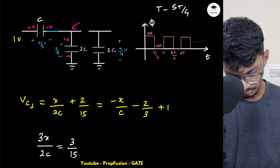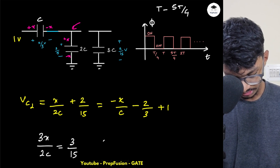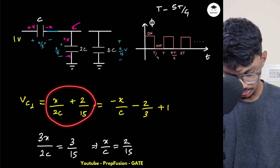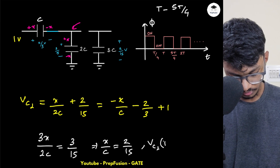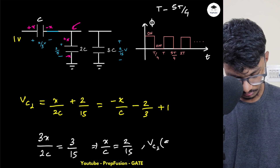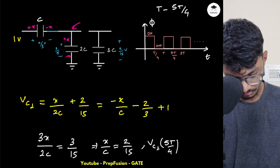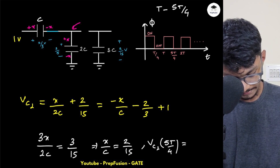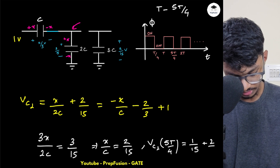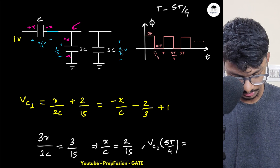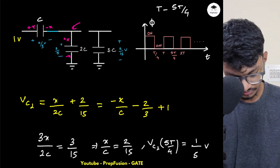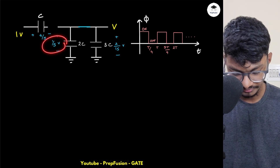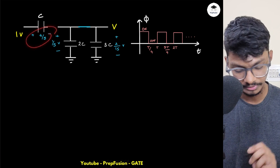Simplifying: 3x/2C = 8/15, so x/C = 2/15 — but I want x/2C + 2/15 = VC2. Substituting, x/2C = 1/15, so VC2(5T/4) = 1/15 + 2/15 = 3/15 = 1/5. Since VC2 is now 1/5, the overall potential must sum to 1, so VC1 becomes 4/5.